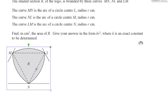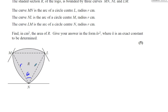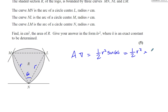Let's find the area of the triangle first. The angle is 60 degrees and both sides are R. The area of the triangle is half times R squared times sine of 60, which is half R squared times root 3 over 2. So that gives root 3 times R squared over 4. That's the area of the triangle.